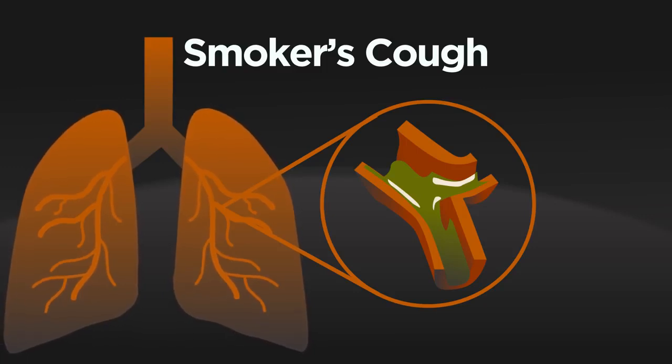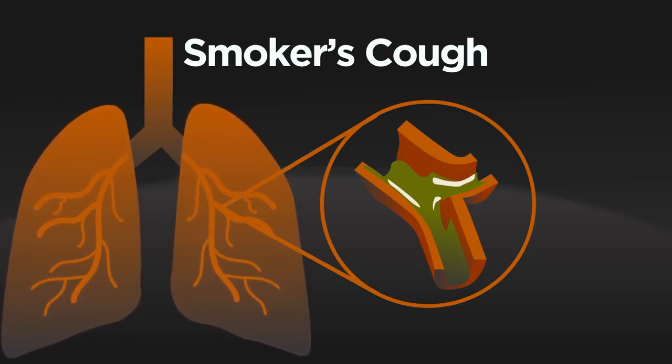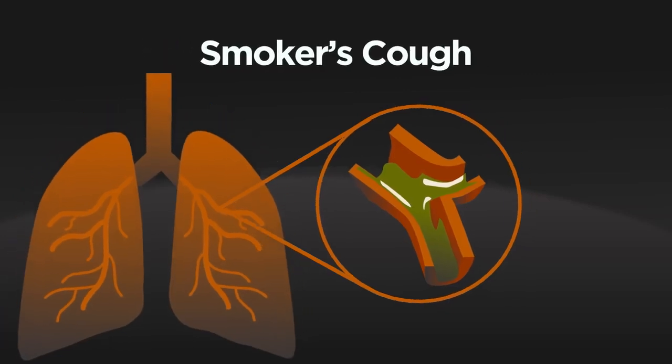So that's the lungs, and we saw earlier that nicotine and carbon monoxide make the heart work much harder. Now the blood vessels.